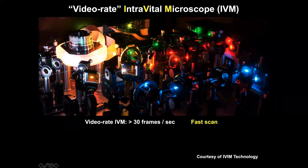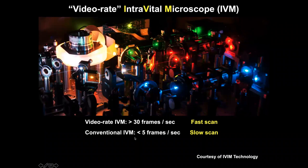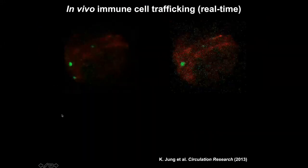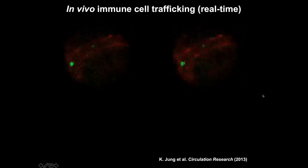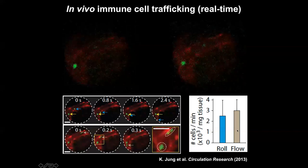We equipped our custom-built multi-photon microscope scanning part with a fast-rotating polygon mirror and galvanometer. We can achieve video-rate acquisition faster than 30 frames per second. Other conventional intravital microscopes have much slower acquisition rates, like 5 frames per second or even slower. This fast acquisition rate is quite important to study biological events — for example, visualizing a monocyte rolling along the vessel wall and patrolling the endothelium, as well as flowing cells inside the vessel. We can even quantify rolling and crawling behaviors of leukocytes, which conventional slow-acquisition microscopes cannot capture.